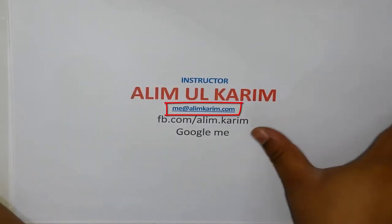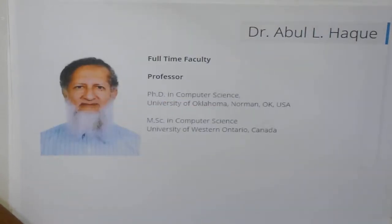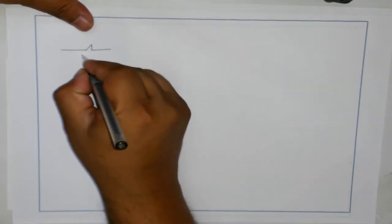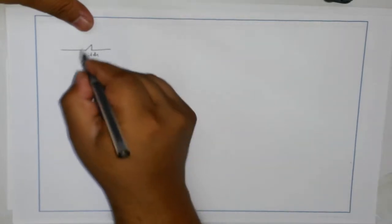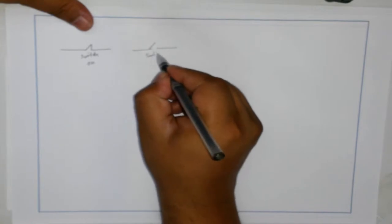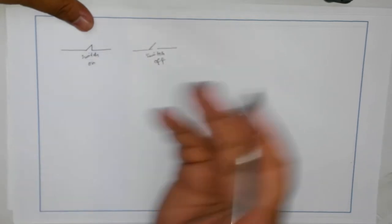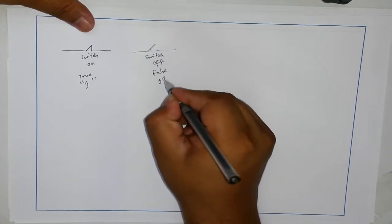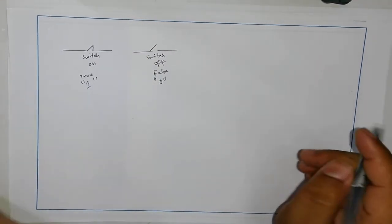Hello guys, I'm Alimul Karim, the instructor for this course. These lectures are being recorded in the memory of Dr. Abdul Hoxher. In the previous lecture we saw how true/false works. Here I'm going to expand on the first lecture in more detail. A switch can be described like this — a switch that is on, and a switch that is off. These represent true and false, or one and zero. That's the primary idea.